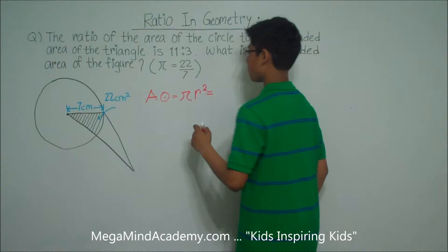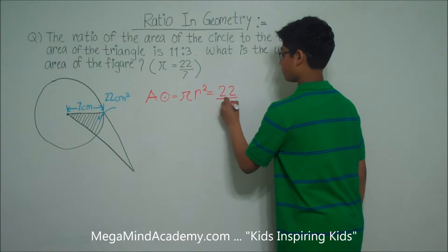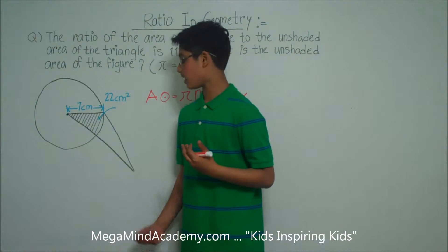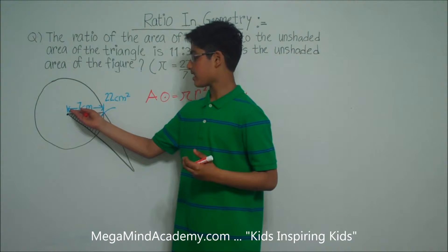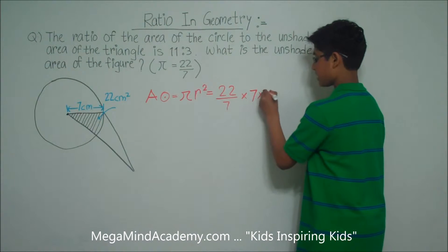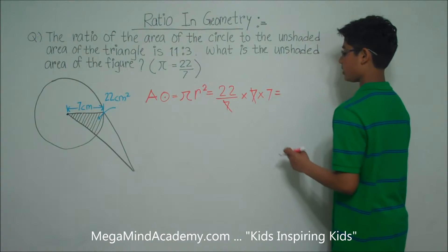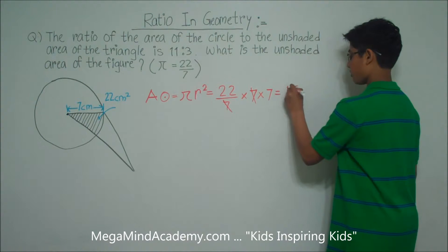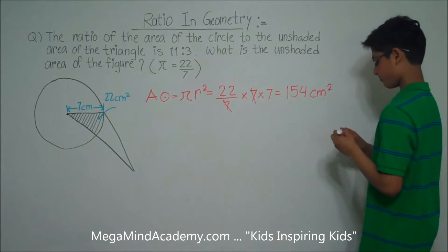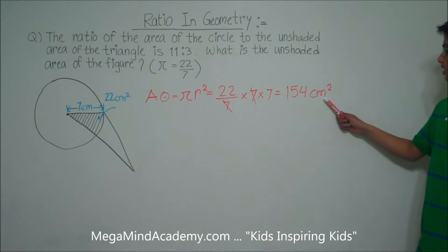That is equal to pi, and the problem gives us that pi is equal to 22 over 7, times radius squared. It says in the diagram that the radius is 7 centimeters. So times 7 squared, or 7 times 7. The 7 cancels out with 7, and we are left with 22 times 7, which is equal to 154 centimeters squared.